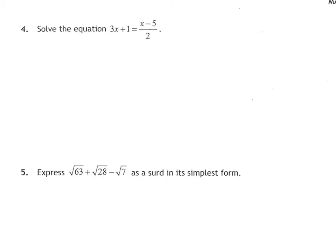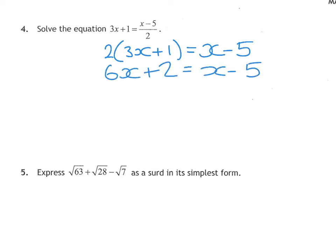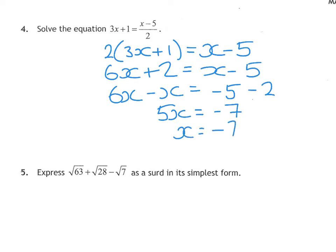Question 4 says to solve the equation. The first thing I'm going to do is get rid of the fraction — it's a divide by 2 on that side, so times by 2 on the other side. Because there are two terms, I'll put it in a bracket. Multiplying out gives 6x + 2 = x − 5. Move letters left and numbers right: 6x − x on the left, −5 − 2 on the right, giving 5x = −7. Don't be put off that it doesn't divide nicely — we leave it as −7 over 5. You could also write that as −1 and 2 fifths, but why bother?